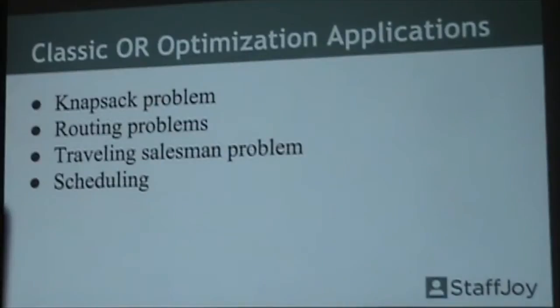Scheduling is another classic optimization problem. That's what we're solving at StaffJoy. We're looking at taking a workforce and different types of demand and saying, how can we schedule people subject to these constraints? Like a part-time worker can only work 20 hours per week, they might not be available on Tuesdays, something like that.